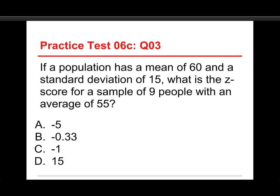Alright, number 3. If a population has a mean of 60 and a standard deviation of 15, what's the z-score for a sample of 9 people with an average of 55? The choices are minus 5, minus 0.33, minus 1, or 15. The answer is minus 1.